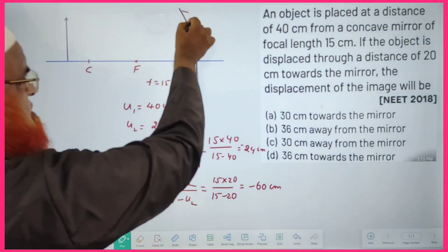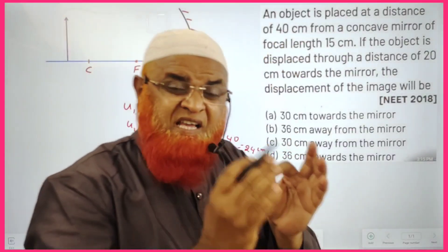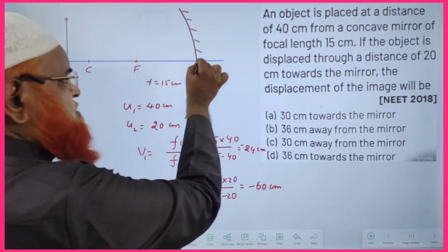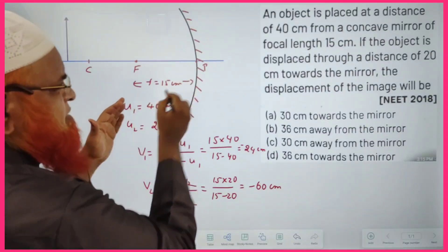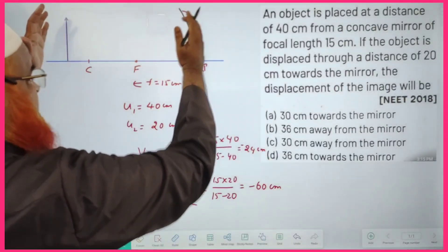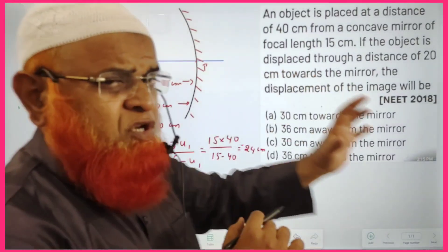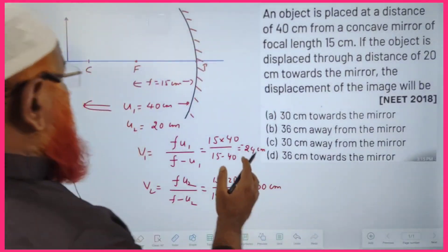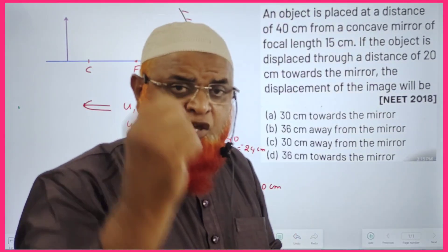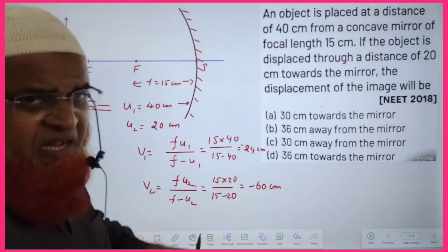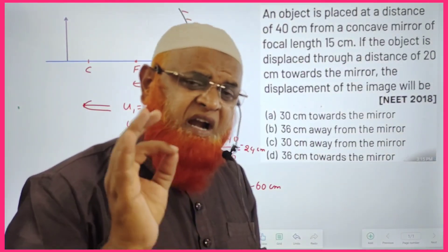Here we have a concave mirror and the object is placed at a distance of 40 centimeters from the pole of the mirror. The focal length of the mirror is 15 centimeters. This is the object distance u1 = 40 centimeters. The problem states that the object has been shifted toward the mirror. When the object is shifted towards the mirror, the image moves away from the mirror.